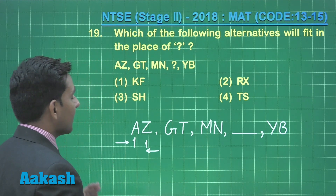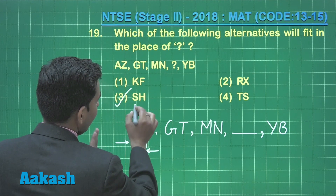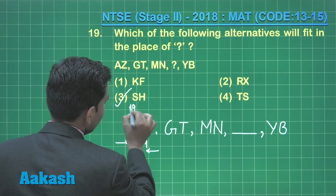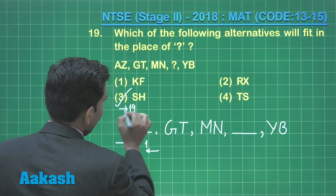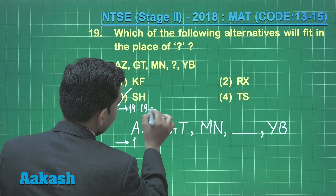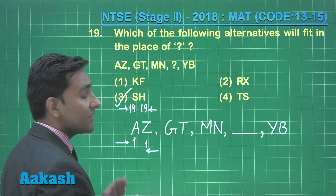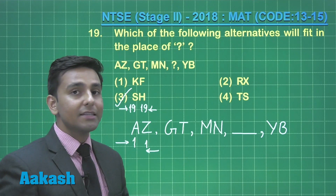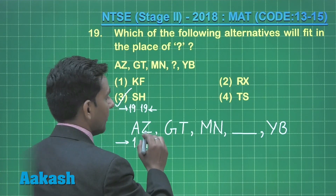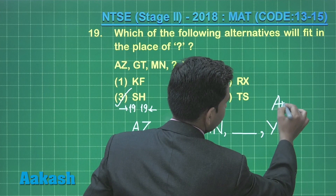The correct option is sh — the position of letter s is 19th from the start of the alphabet, and the position of letter h is 19th from the end of the English alphabet. That means option number 3 is the correct answer for this question.